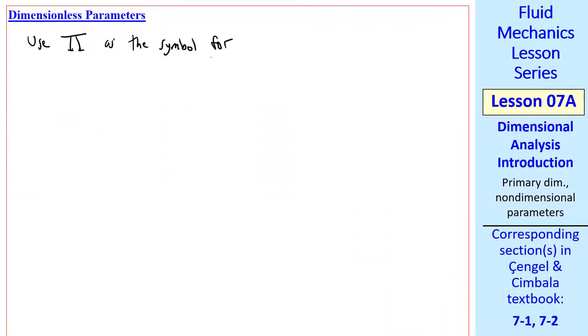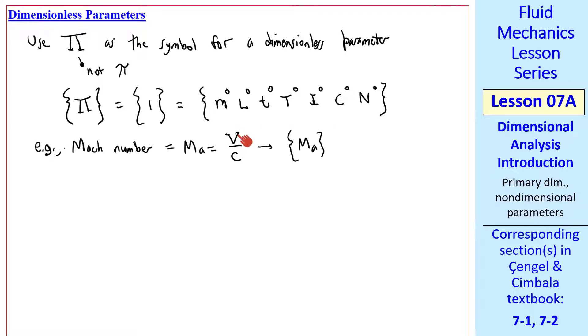Now let's talk about dimensionless parameters. We use capital Greek pi as the symbol for a dimensionless parameter. Make sure you don't confuse this pi with lowercase pi. What we mean by a dimensionless parameter is that the dimensions of pi are 1. In other words, it has dimensions of m to the 0, which is 1, l to the 0, t to the 0, capital T to the 0, etc. In other words, all seven primary dimensions have exponents of 0, which means there's no dimensions whatsoever. Since each of these terms is 1, so the dimensions of capital pi are 1. Early on in the course, I introduced Mach number, which is speed over the speed of sound. Since it's a speed over a speed, the dimensions of Mach number are 1, or unity. So Mach number is a dimensionless parameter, or a pi.